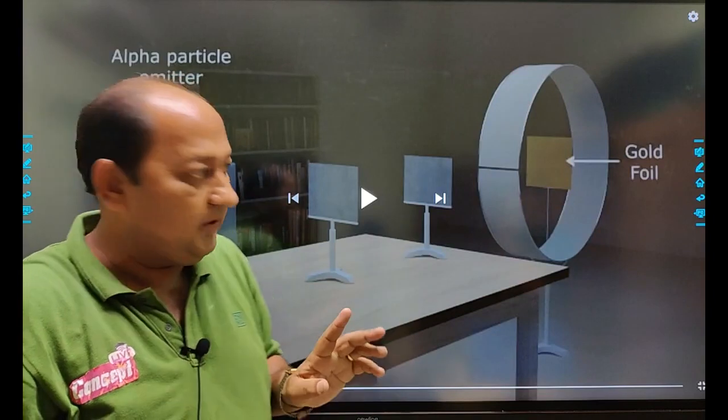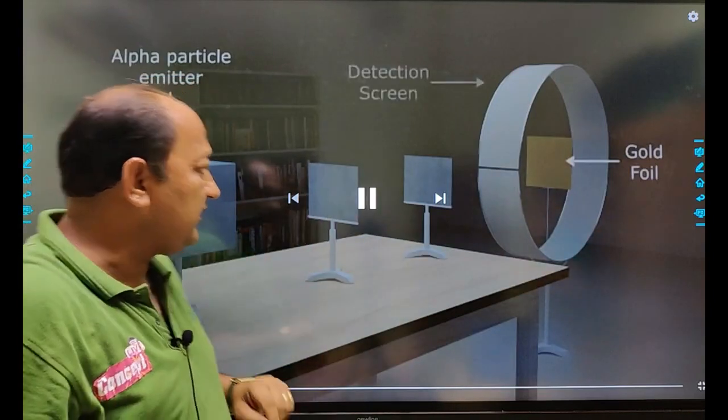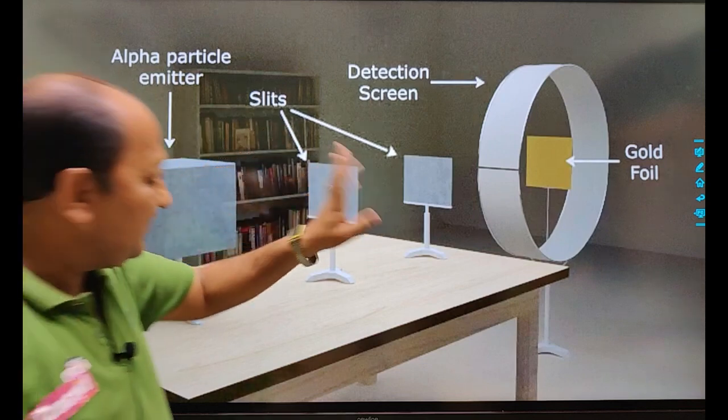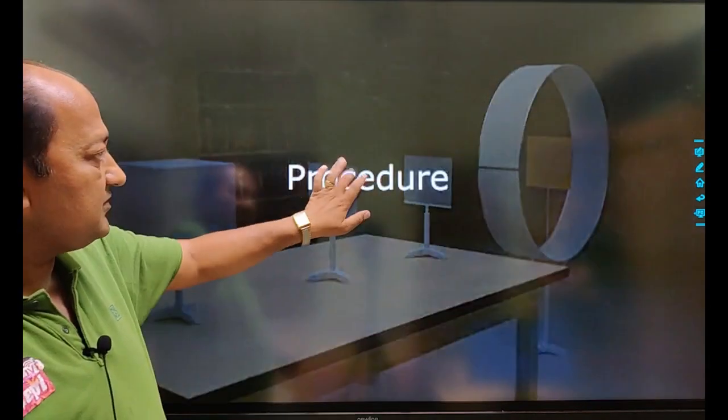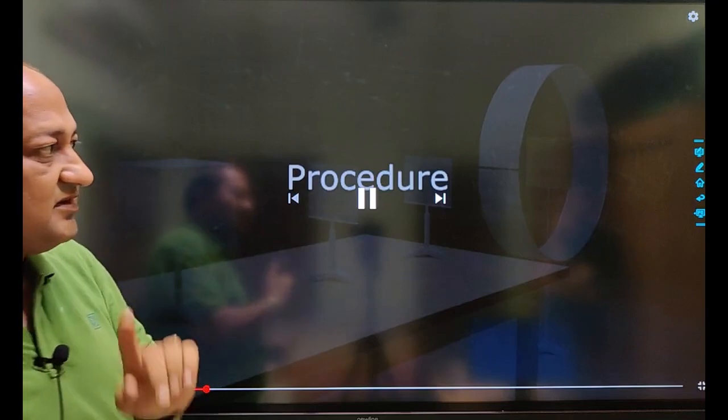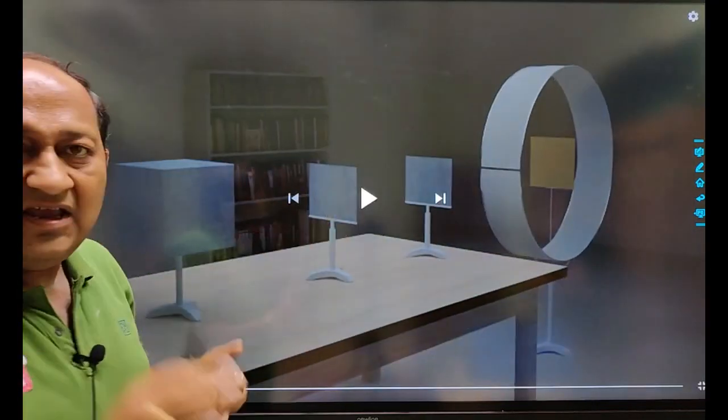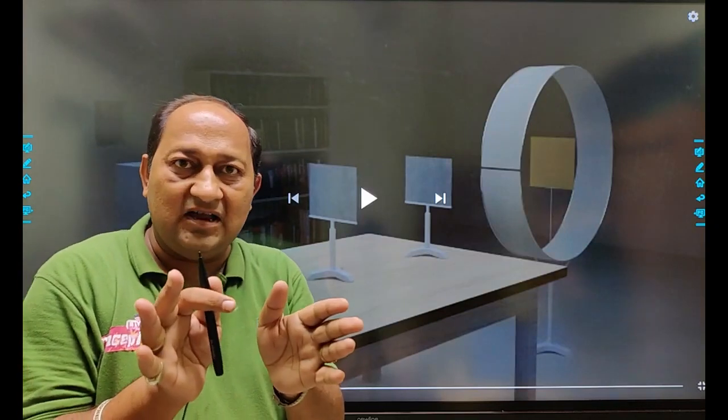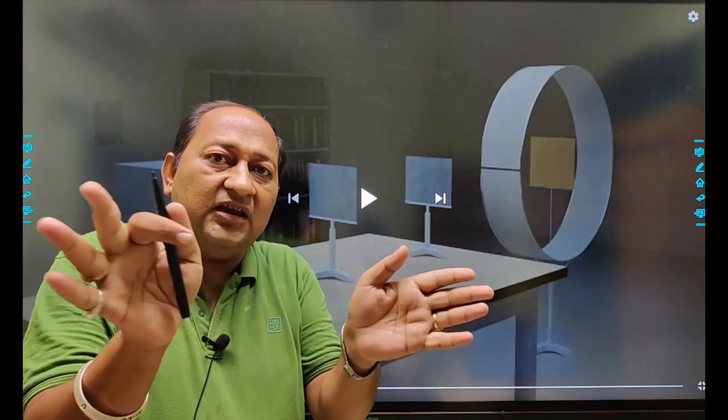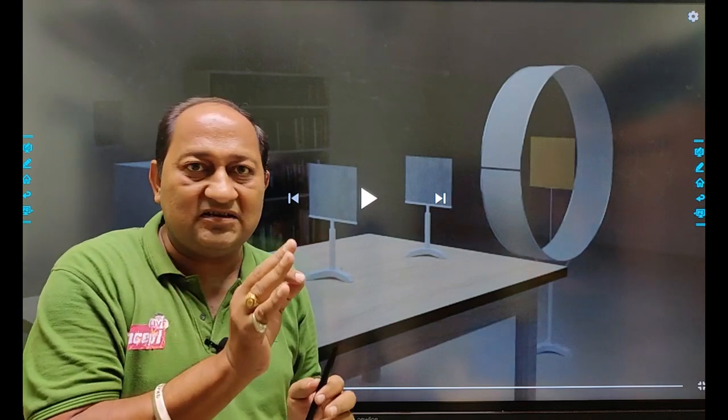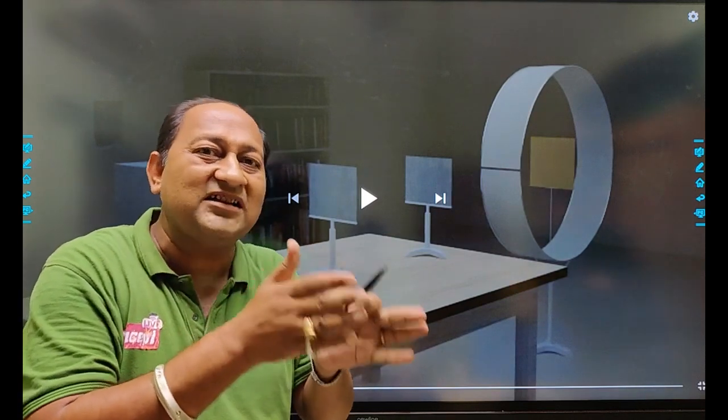There is a thin gold foil. These are the slits. Alpha particles are moving here and there in all directions. When they pass through the slits, they move along one direction only.